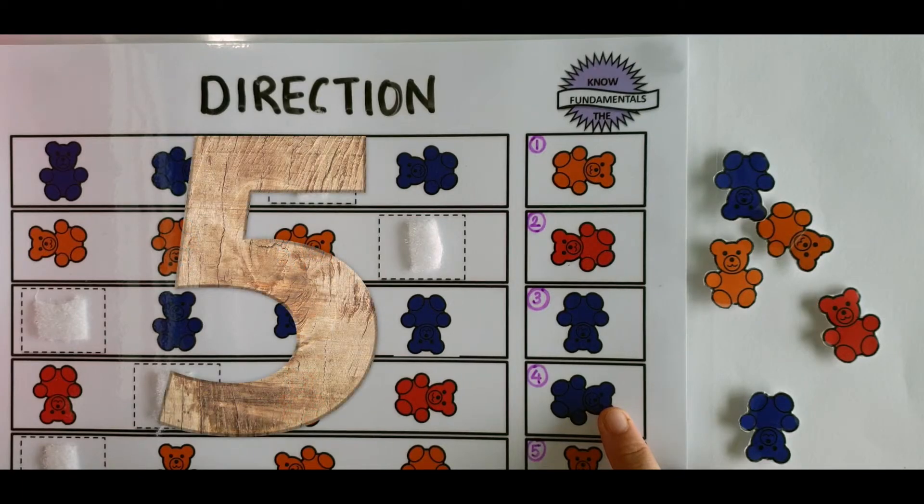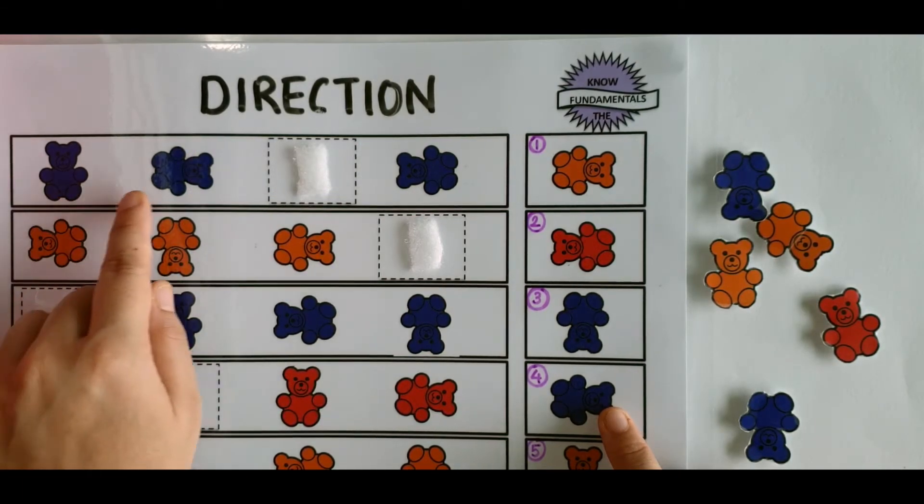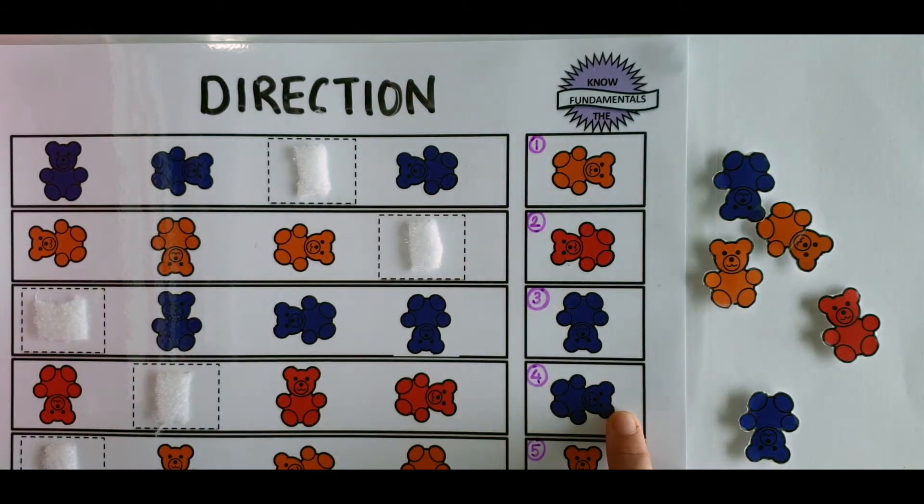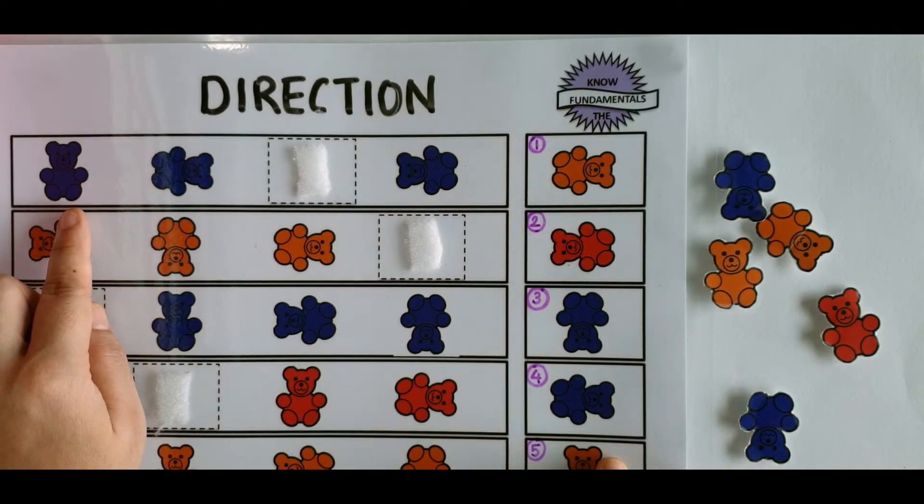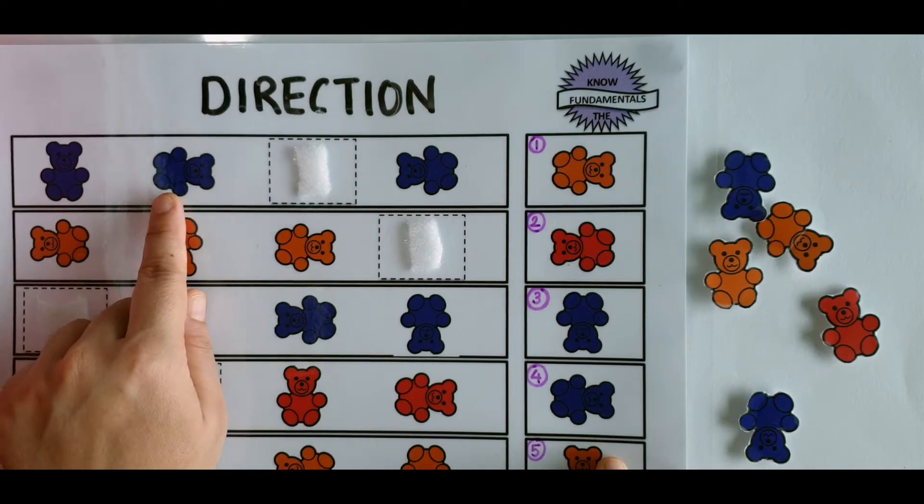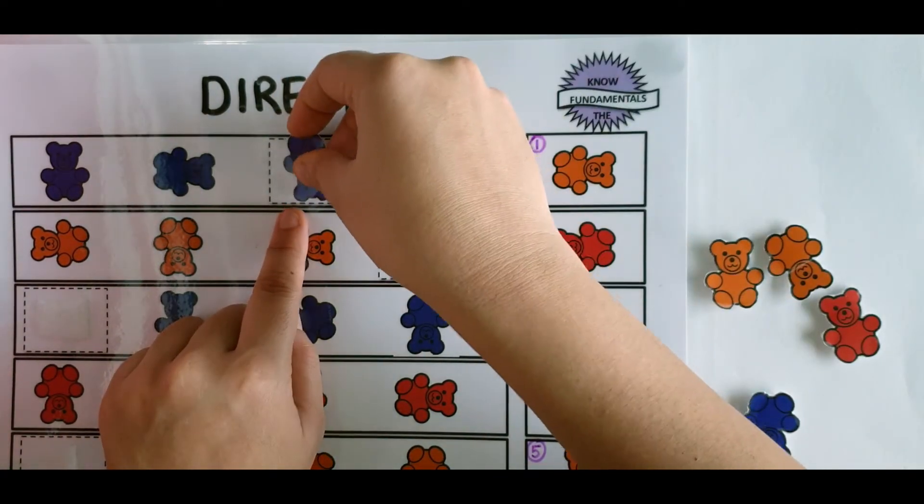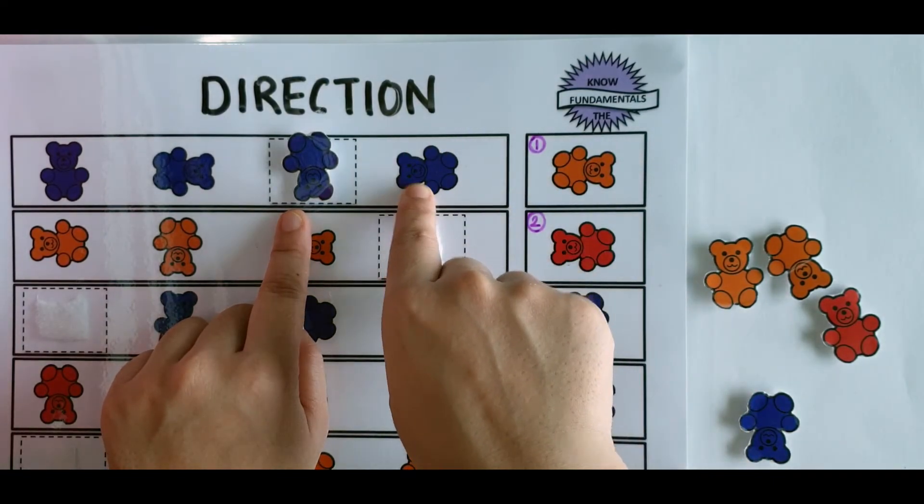So this is activity number five called follow the direction. They have to see how each bear is moving and match with the right direction from the right hand side. So for example, here, the first one, it's moving in clockwise direction. So it's moving right, then again, right. So it goes this way. And then again, it's going to turn right.